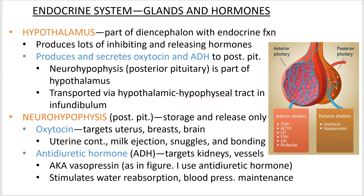So here they are. Oxytocin — this is usually thought of as targeting the uterus. It causes uterine contractions, but as mentioned in the previous screencast, it also causes milk ejection after pregnancy. It also encourages snuggling and bonding. Whenever you snuggle with your sweetie pie, you actually produce oxytocin, which gives you a comforting feeling and reinforces that behavior. When you pet your dog, you and your dog both get oxytocin dumps.